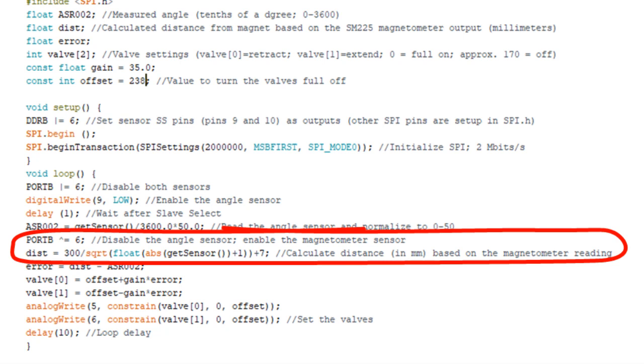We used a simple inverse square root approximation for distance as a function of field. For better accuracy, we could calibrate a piecewise linear lookup table as we demonstrated in another video.